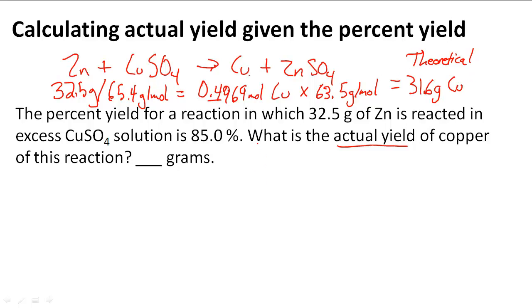Now to find the actual yield, we're going to use the percent yield. We can use the theoretical yield, 31.6 grams of Cu, and multiply it by the percentage yield, because 85% of the theoretical yield is going to be the actual yield.